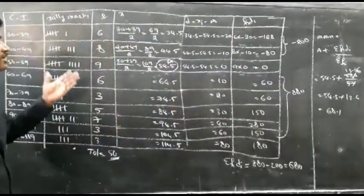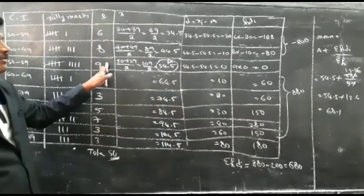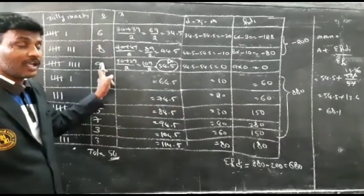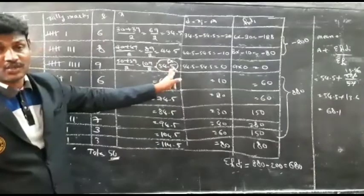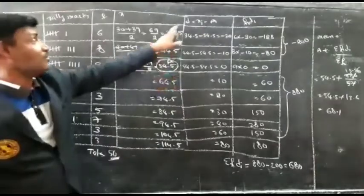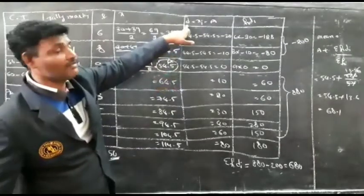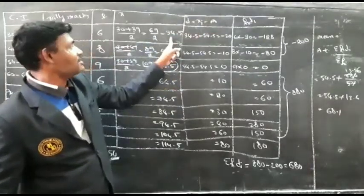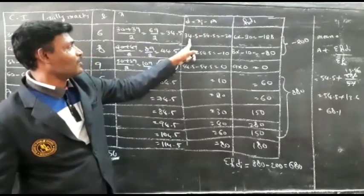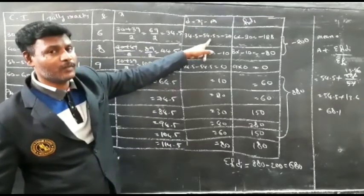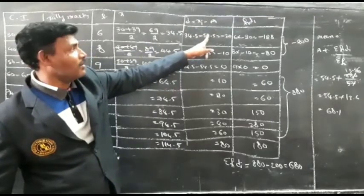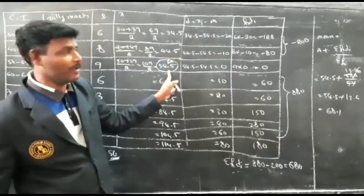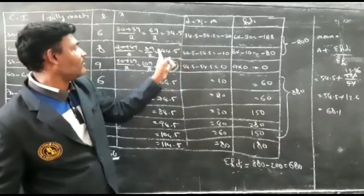The highest frequency is 9, and the mid-value of that class is taken as the assumed mean A. So A equals 54.5. To find the deviation Di, the formula is Xi minus A.